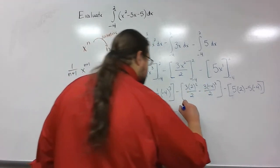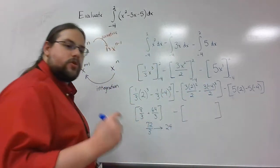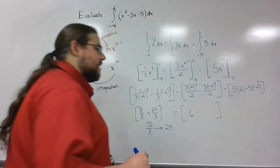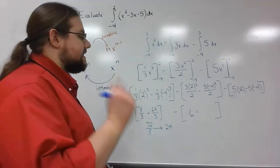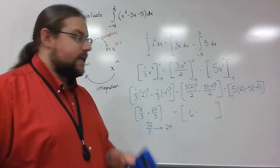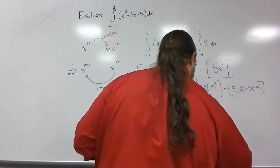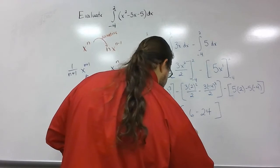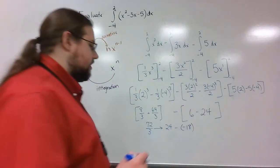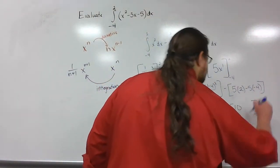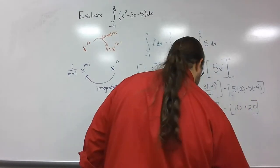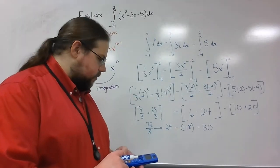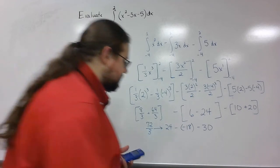Now I subtract the second term. 2 squared is 4, times 3 is 12, divided by 2 is 6. Then negative 4 squared is 16, times 3 is 48, divided by 2 is 24. So the second term gives 6 minus 24, which is negative 18. For the last part, 5 times 2 is 10, and negative 5 times negative 4 is 20 — wait, 5 times 2 minus 5 times negative 4 gives 10 plus 20, which is 30. So I subtract 30. That leaves me with 24 minus negative 18 minus 30, which gives a whopping 12.